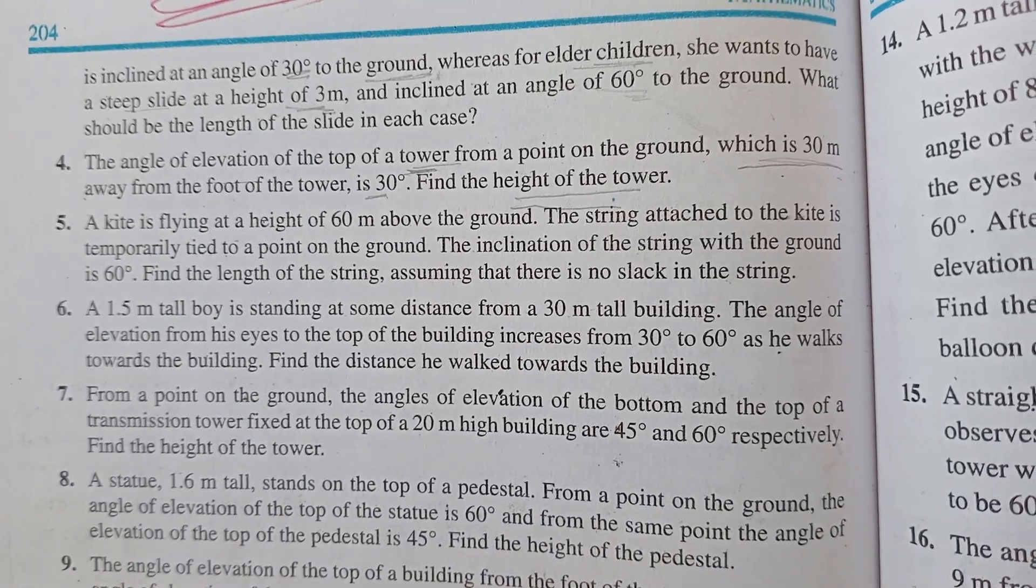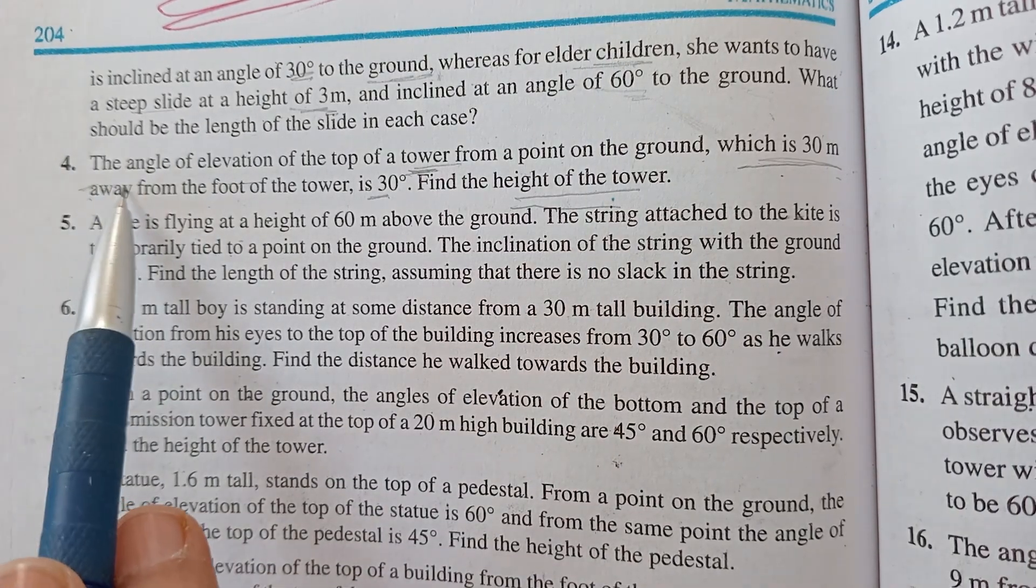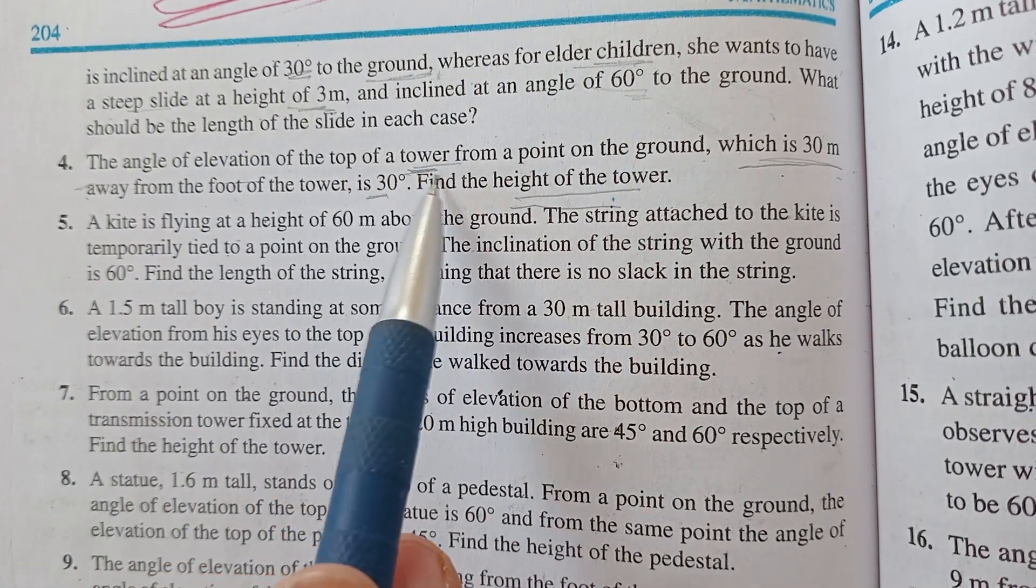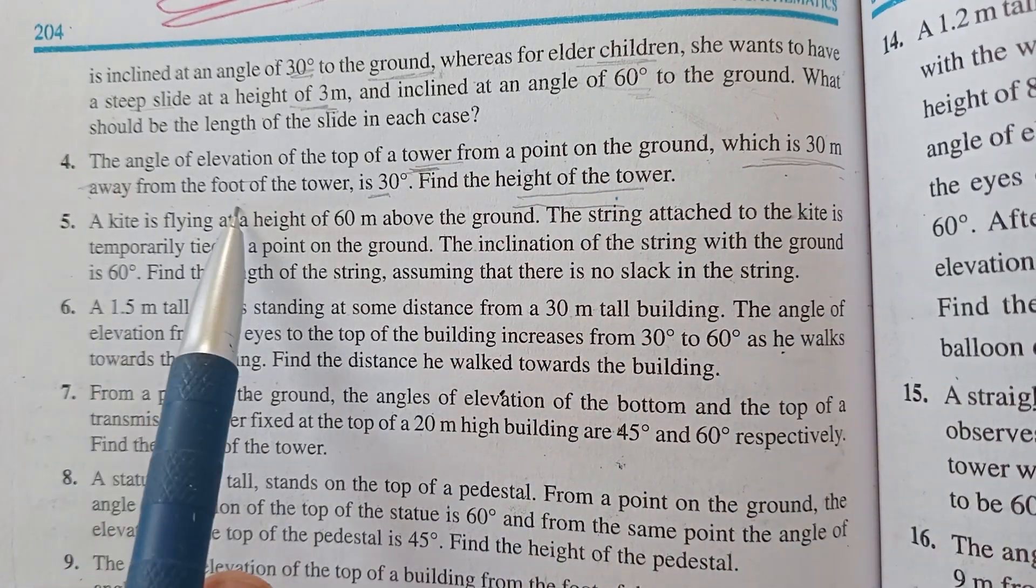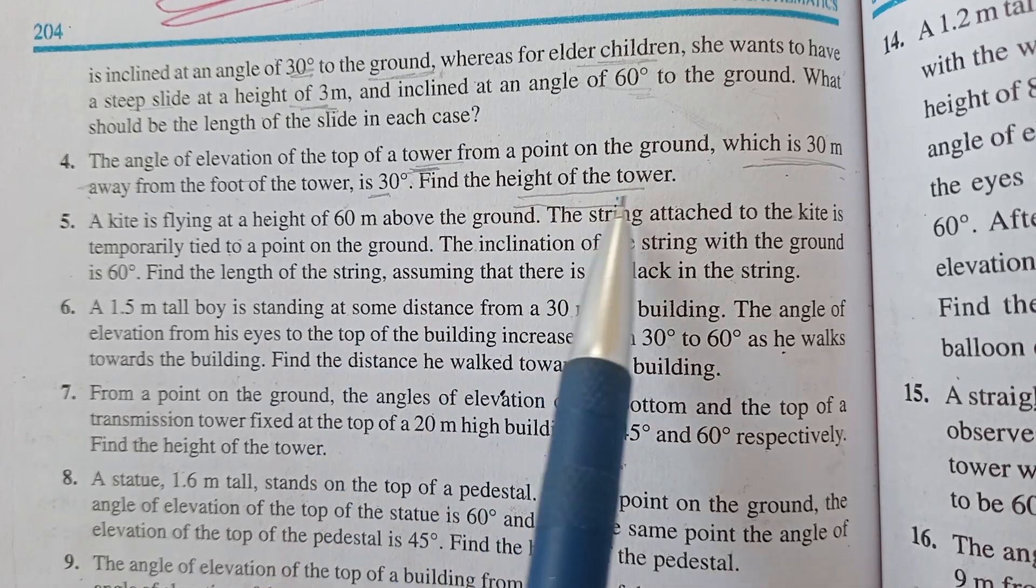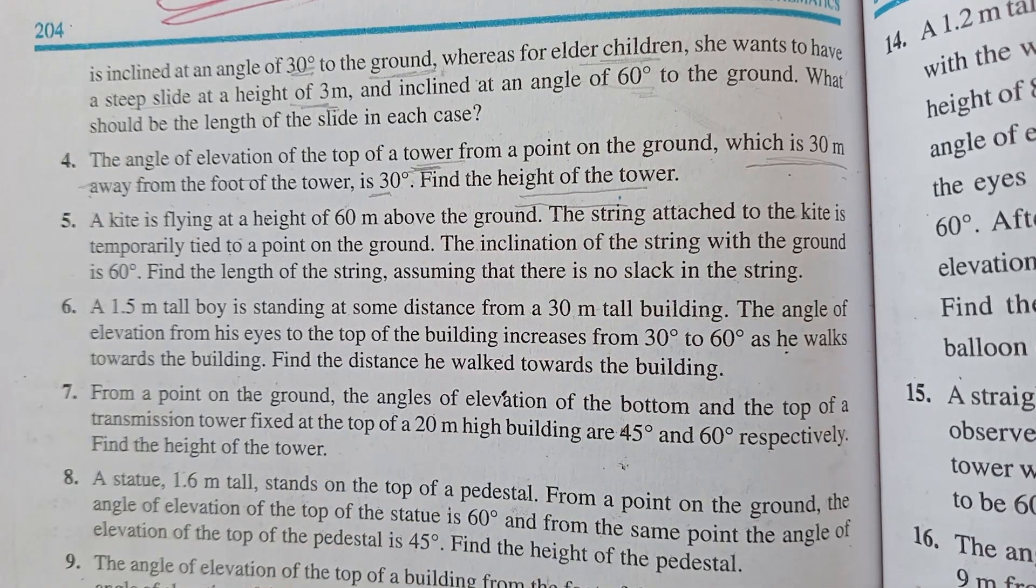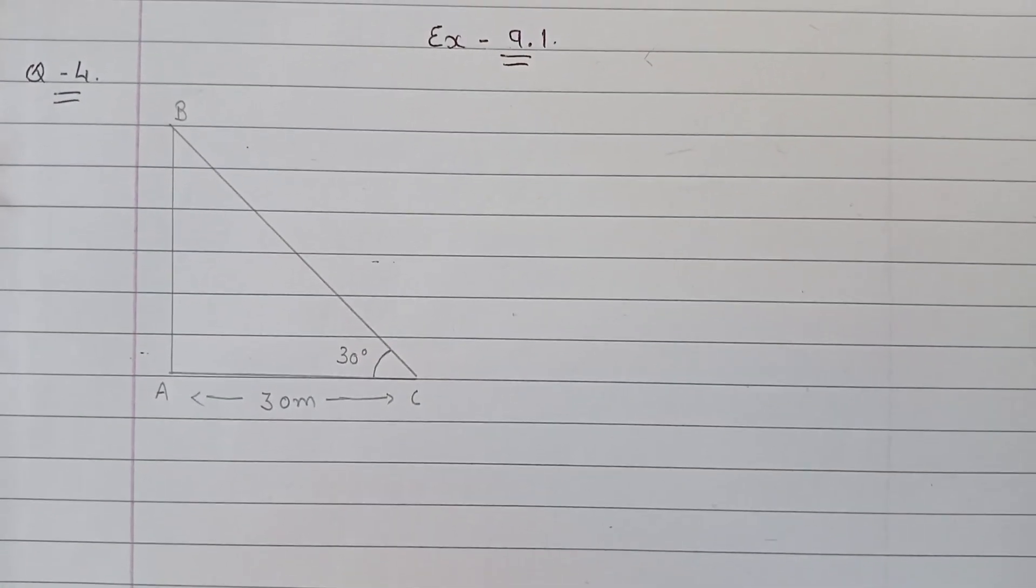Hello students, in this session we will continue with Exercise 9.1, question number 4. The angle of elevation of the top of tower from a point on the ground which is 30 meters away from the foot of the tower is 30 degrees. Find the height of the tower. Let's make a figure and try to understand this.